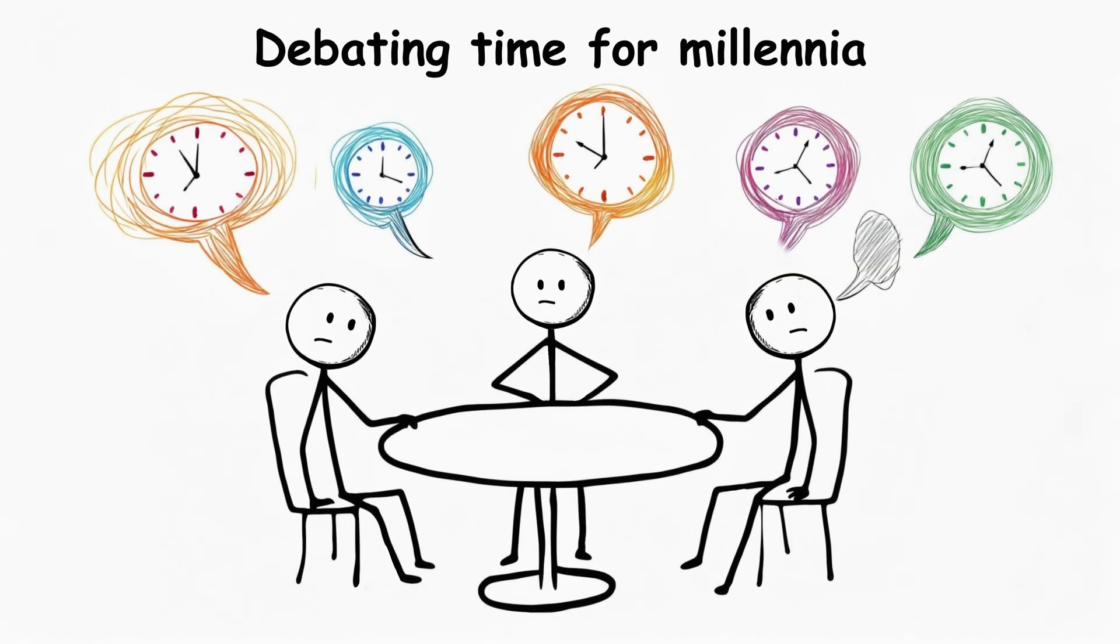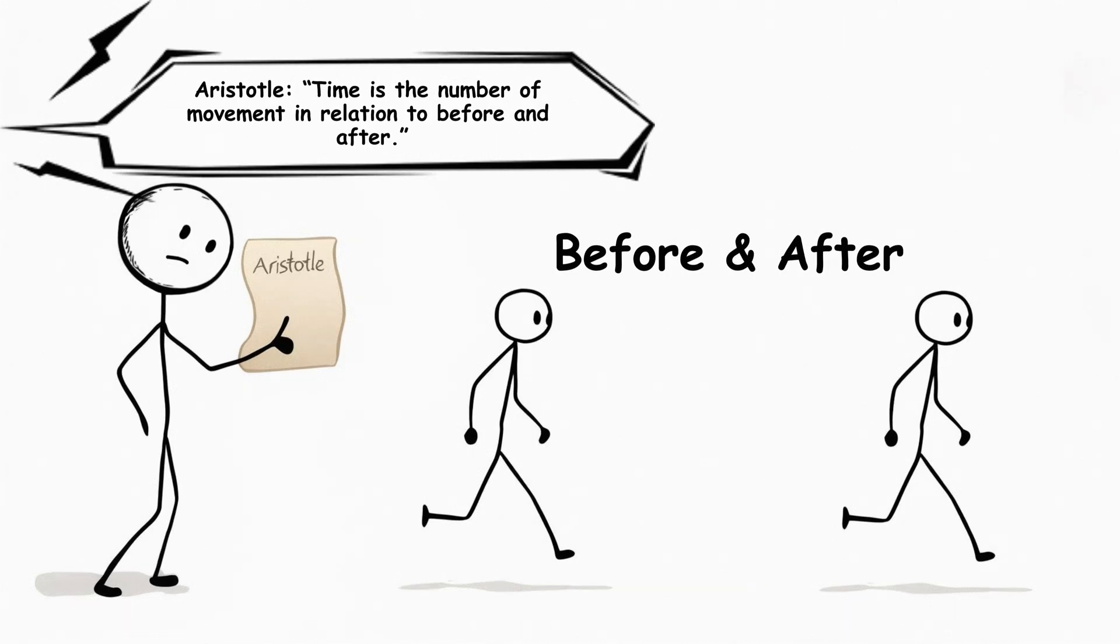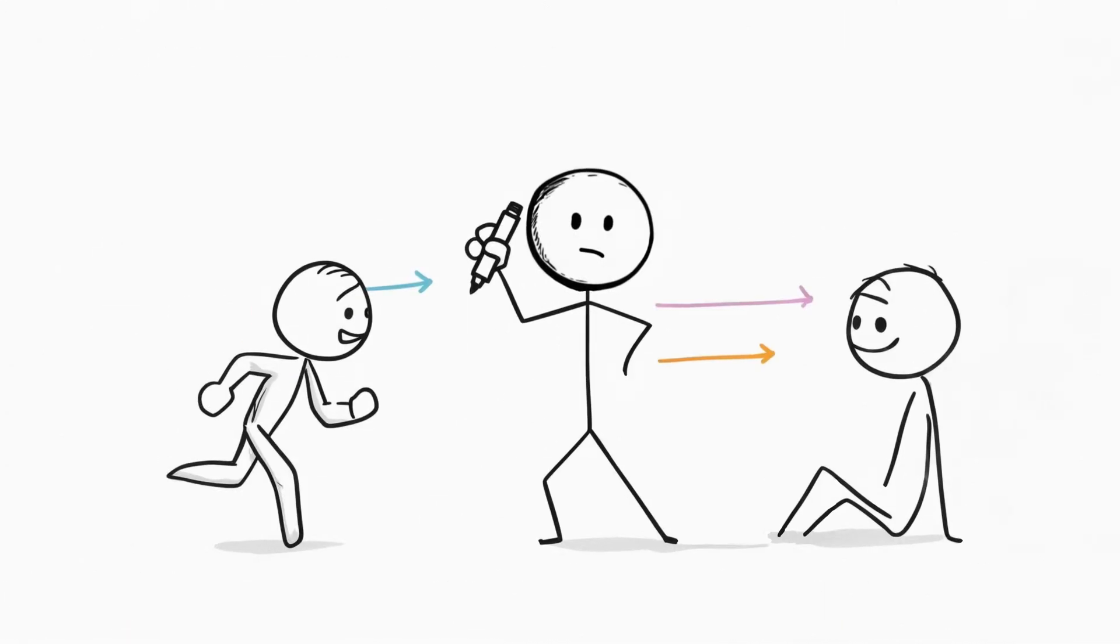Philosophers have debated time for thousands of years. Aristotle said time is the number of movement in relation to before and after. In simpler words, not a thing, but a way of comparing events.